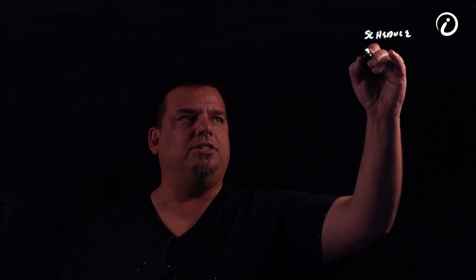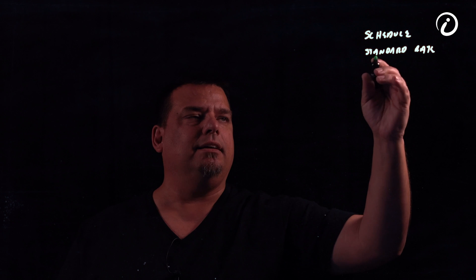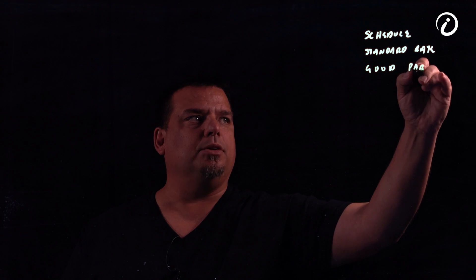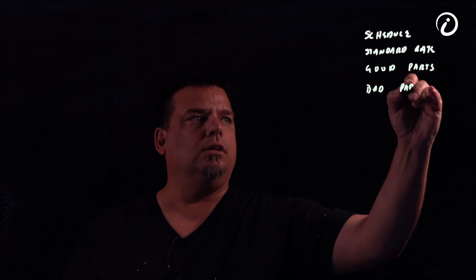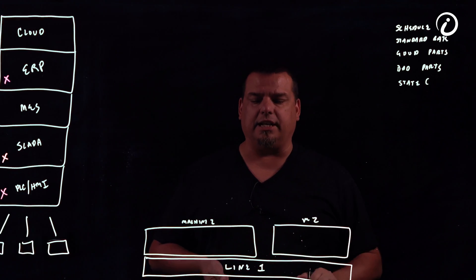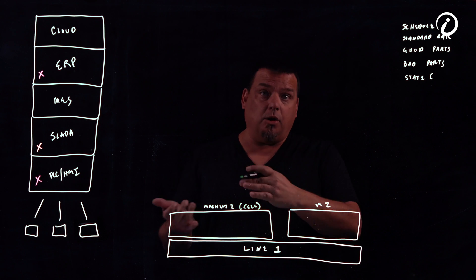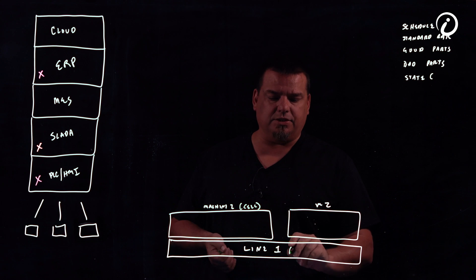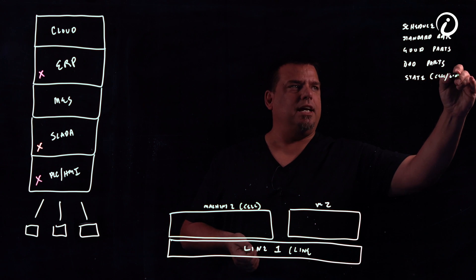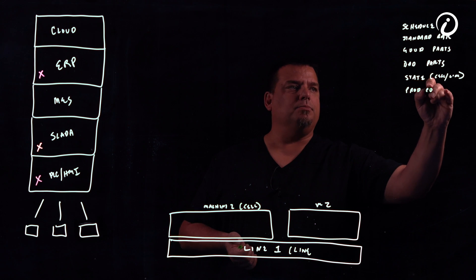I need to know what is my schedule. I need to know my standard rates. And they don't just have to be standard. They could be a scheduled rate. I need to know the good parts that I produced. I need to know the bad parts I produced. I need to know what was the state of my machine or the state of my line. And I'm going to talk about that in a second.